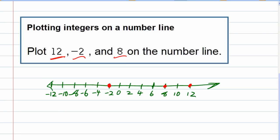It worked out really nicely because all those numbers were even, but even if I had an odd number, I could still plot it — I would just put it in between the even numbers where it belonged. For example, if I were going to plot the number 3, I would go right in the middle of 2 and 4. So that's plotting integers on a number line.